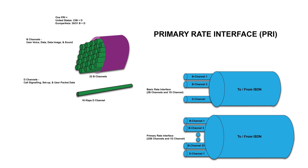The twenty-fourth channel is the D channel, indicated with the tube by itself. That would be for call signaling setup and user packet data information. That D channel is comprised of 64K. If you look further down the page, you'll notice the diagram indicates a primary rate interface diagram of 23 B channels and one D channel. The B channels start at channel number one and go through channel number 23. The D channel, which is the twenty-fourth channel, is referenced by itself as a single channel, responsible for setting up call signaling, user packet data, call ID name, and number.